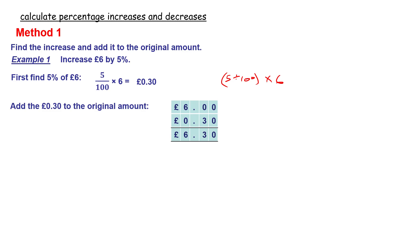And what we do then, we take that 30 pence and we add it to the six pounds. It gives us six pounds 30. It's nice and straightforward.